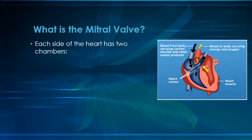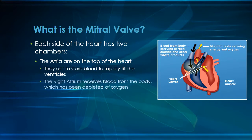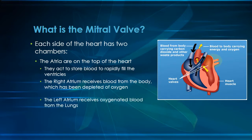We've talked about the different chambers of the heart. There is an atrium on top of each ventricle. Their main purpose is to act as a storage tank for blood to allow for rapid filling of the ventricles when the atria contract. The right atrium receives blood from the body that has been depleted of oxygen, and the left atrium receives oxygenated blood from the lungs.